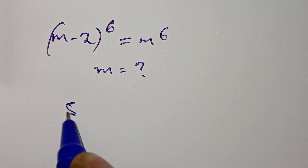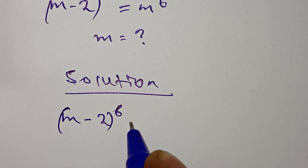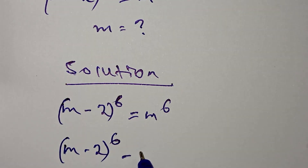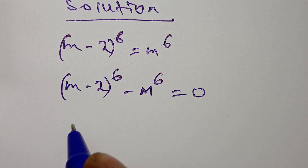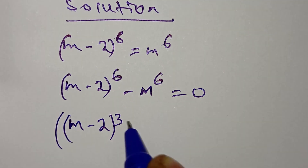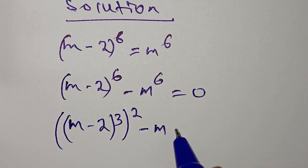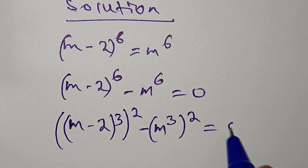So the solution: (m minus 2) to the power of 6 is equal to m to the power of 6. This means (m minus 2) to the power of 6 minus m to the power of 6 is equal to 0. And this is the same as (m minus 2) to the power of 3, squared, minus m to the power of 3, squared, is equal to 0.